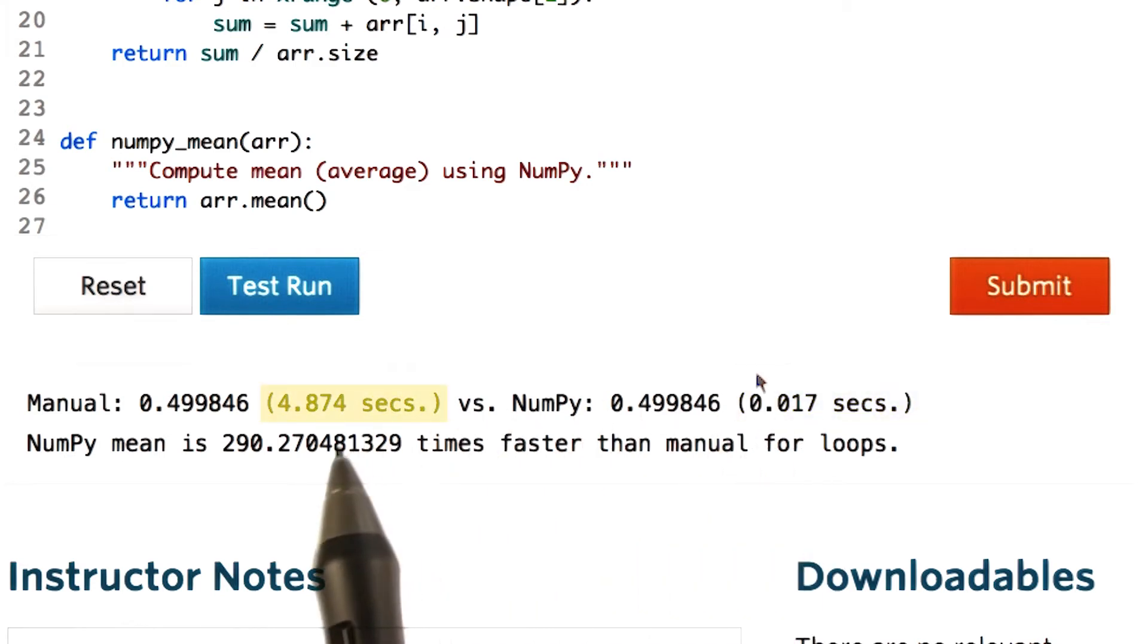On the other hand, the time taken by the manual method of iteration is about five seconds. Hence proved, NumPy is super fast.